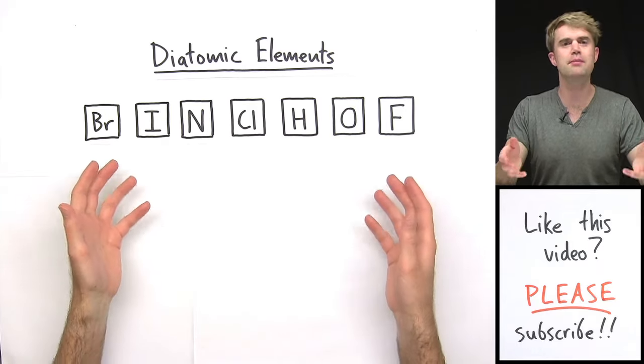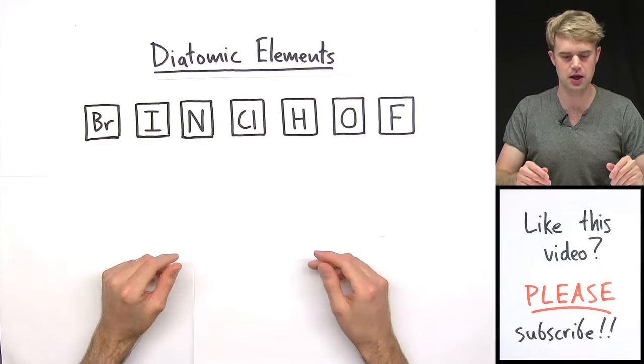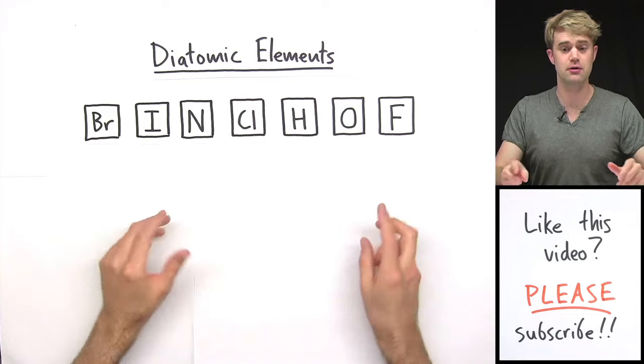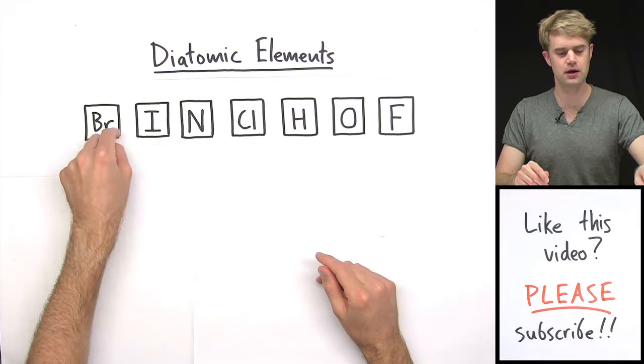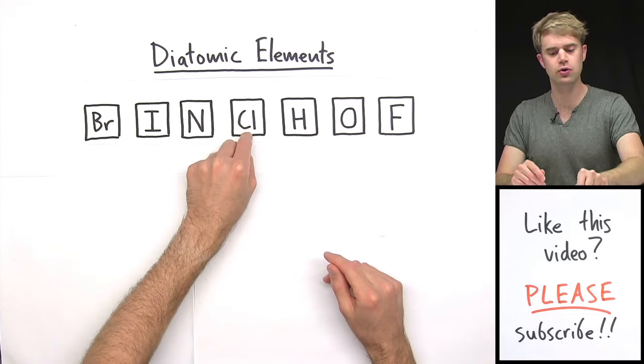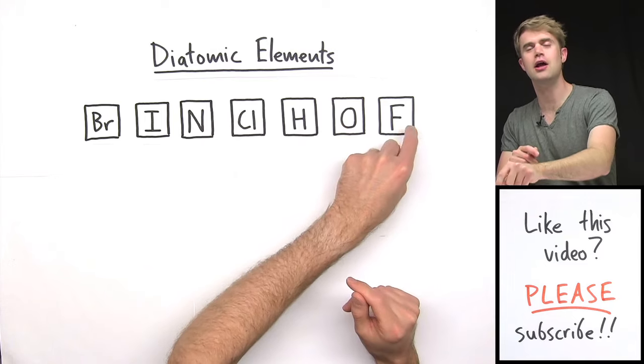Let me talk about a big question that a lot of people have with the diatomic elements. These are the diatomic elements here, there's seven of them, and they're bromine, iodine, nitrogen, chlorine, hydrogen, oxygen, and fluorine.